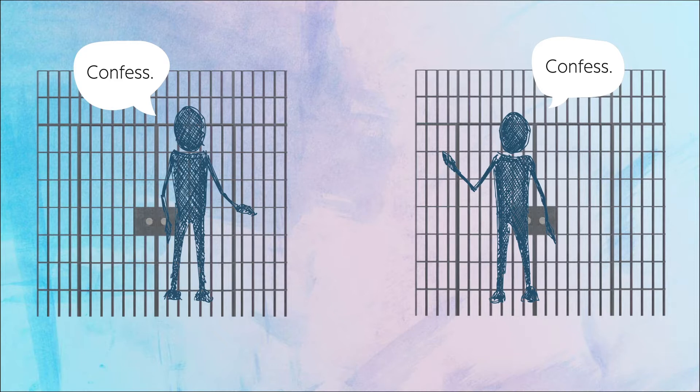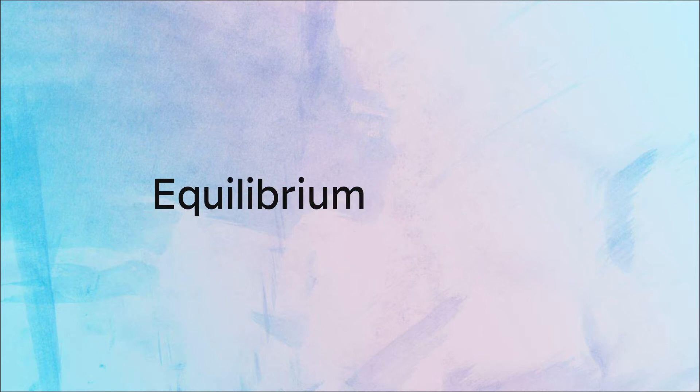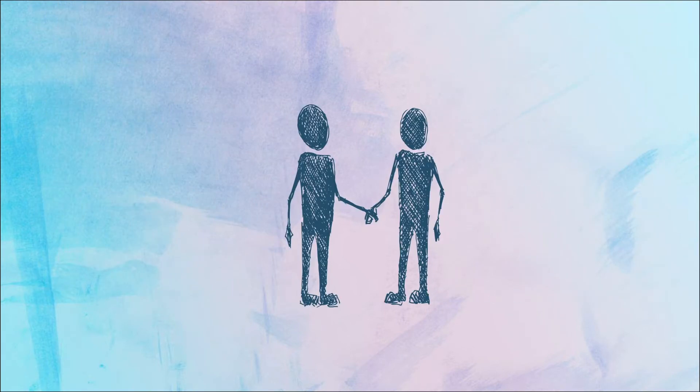Therefore, the Nash equilibrium is reached when both prisoners betray each other and choose to confess. It's important to note that just because the players are at equilibrium, it does not mean that the solution results in the best possible outcome. In any game, there might be other solutions that result in a better payoff for some or all of the players, but reaching these solutions isn't possible because of some constraints.